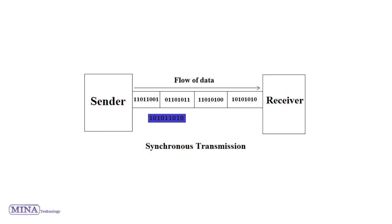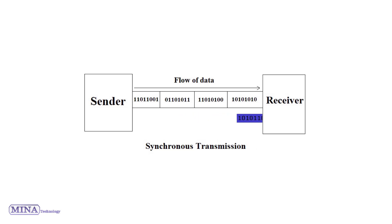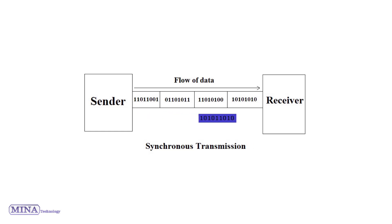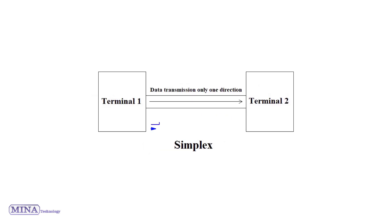In synchronous transmission, data is sent in the form of blocks or frames. This transmission is the full duplex type between sender and receiver. Synchronization is compulsory in synchronous transmission — there is no gap present between data. It is more efficient and more reliable than asynchronous transmission for transferring large amounts of data.